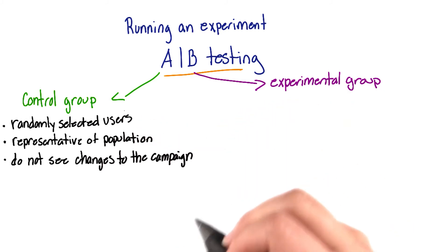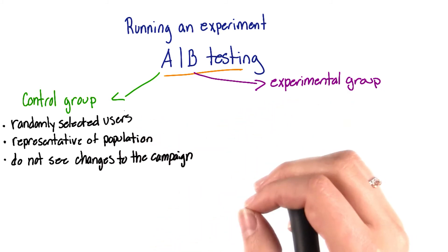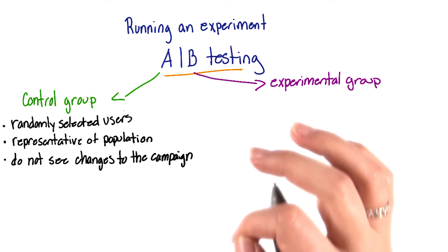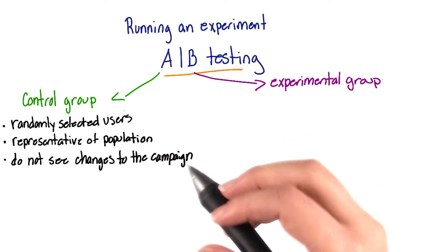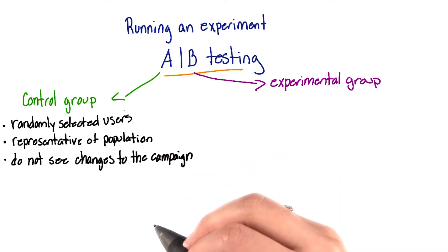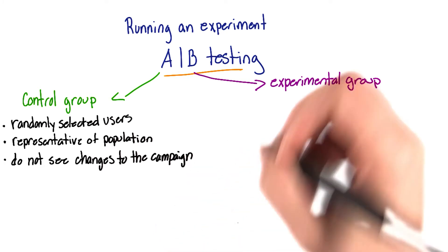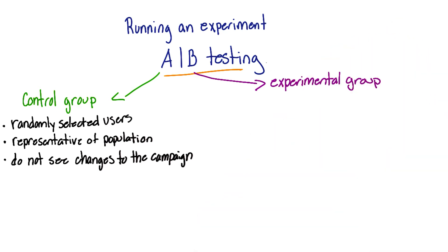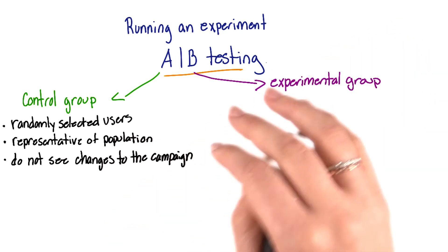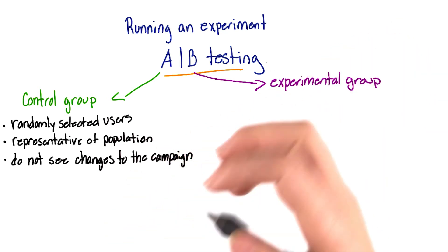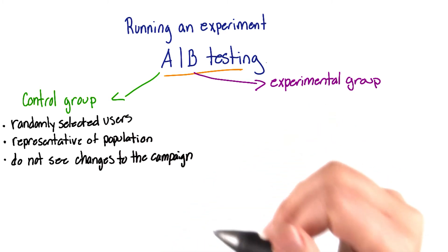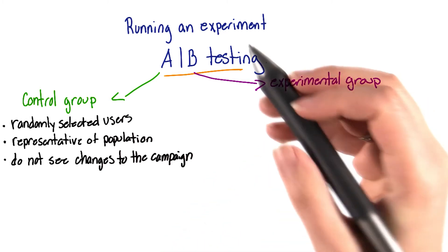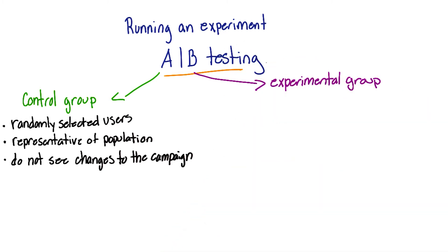Everything except the one change you're targeting should stay the same. For example, if you want to test the effect of moving your sign-up button to the top of the screen, all messaging, colors, looks, and feel of the site should stay the same except for moving the sign-up button to the top of the screen.